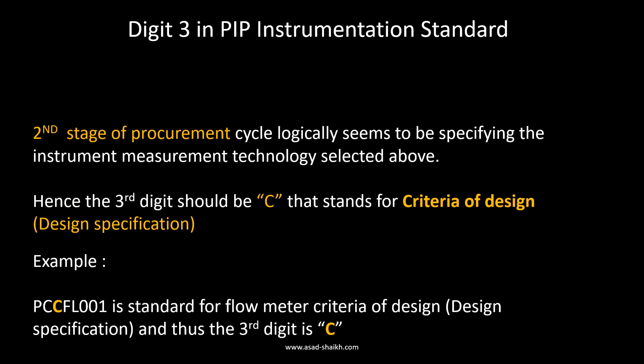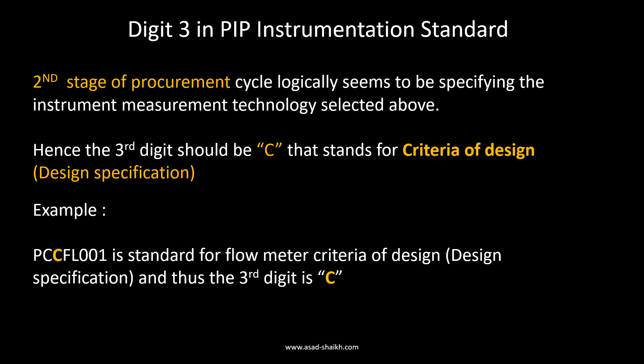Moving to other stages of the procurement cycle: the second stage is selecting the design or specifications. Suppose you determine that an orifice flow meter is your desired technology. You then need to specify details such as the type of tappings and their orientation. For this, the PIP standard is PCCFL001, where the third digit C stands for design specification, or what they refer to as criteria of design.